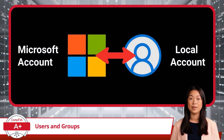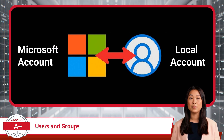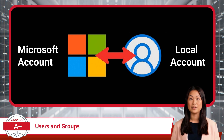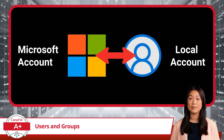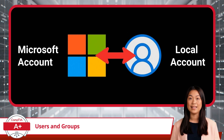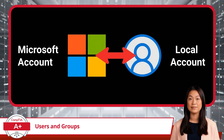When setting up a Windows user, you have two main account options: a Microsoft account or a local account. A Microsoft account connects your login credentials to your online Microsoft profile, giving you access to a wide range of cloud-based services and features. This account type links your system with Microsoft's ecosystem, enabling you to use services like OneDrive for cloud storage, the Microsoft Store for app and software downloads, and the ability to synchronize across multiple devices.